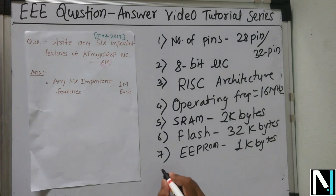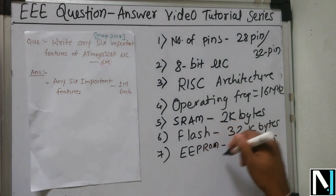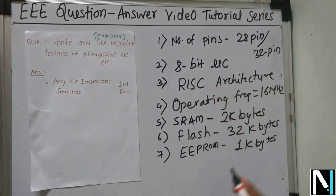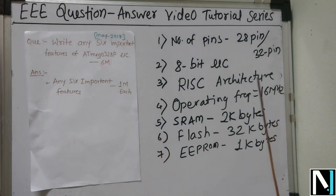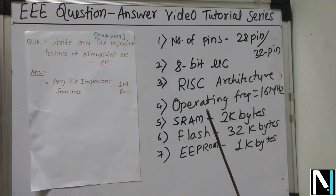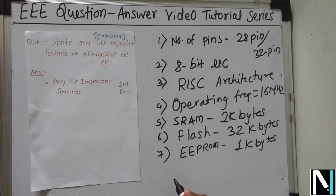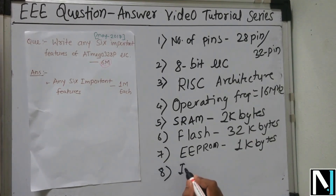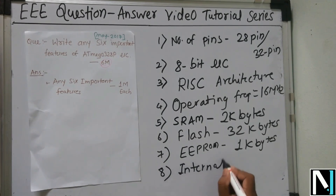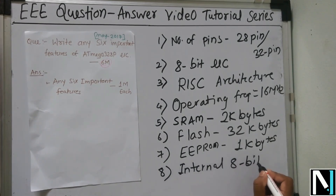Now I would like to cover the peripherals present internally in the ATmega 328P. The ATmega 328P has an internal 8-bit ADC — Analog to Digital Converter.